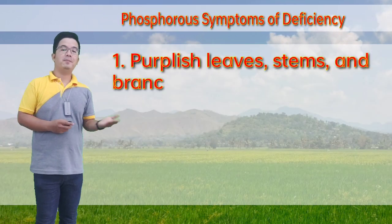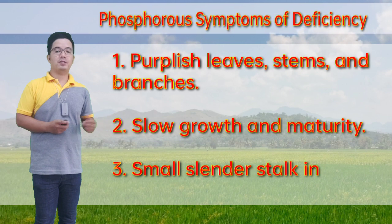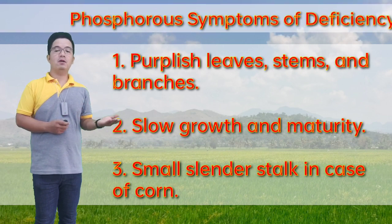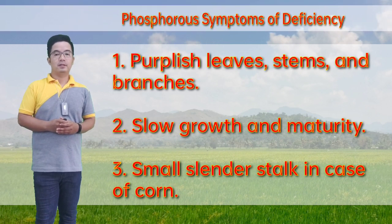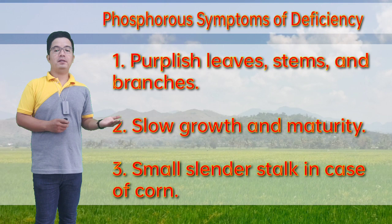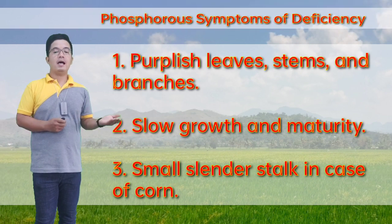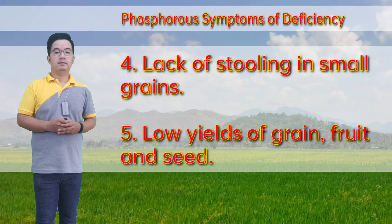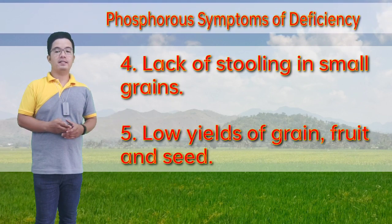Symptoms of phosphorus deficiency: purplish leaves, stems, and branches. It also results in slow growth and maturity. You can also observe small, slender stalks in the case of corn, lack of tillering in small grains, and no yield of grains, fruit, and seed.